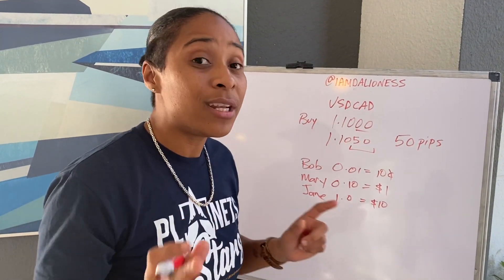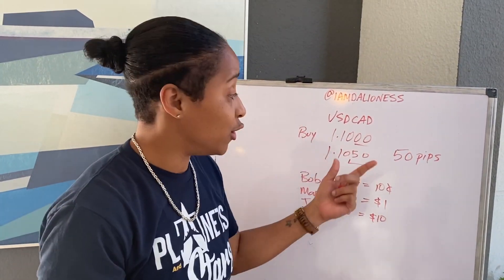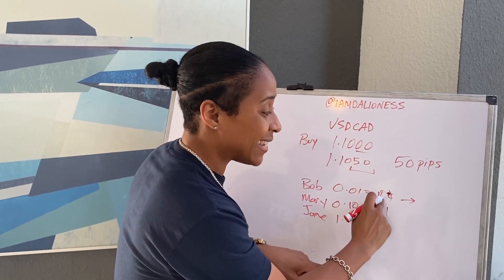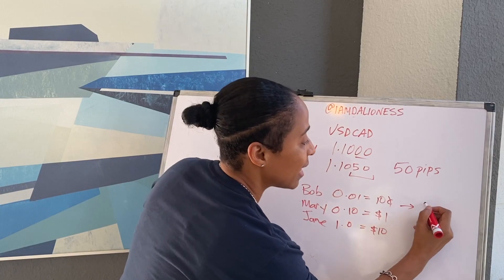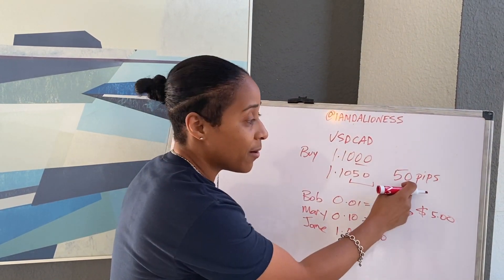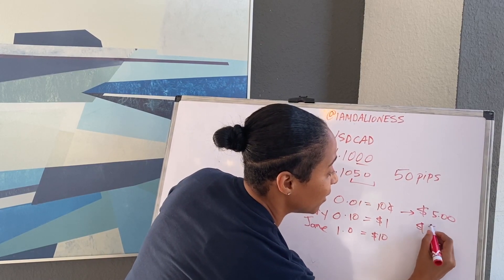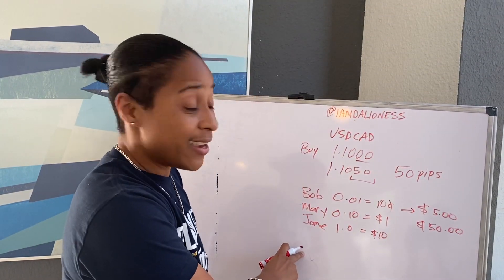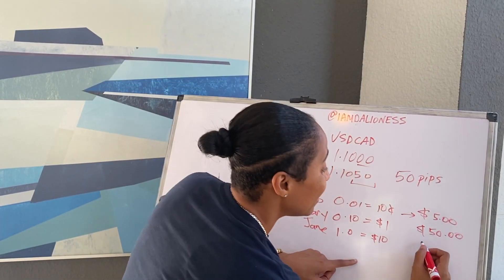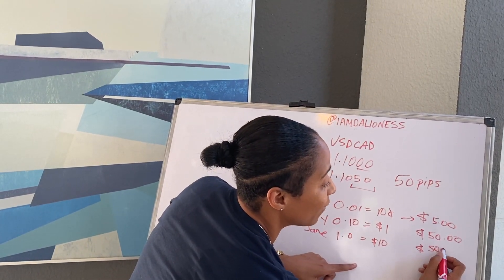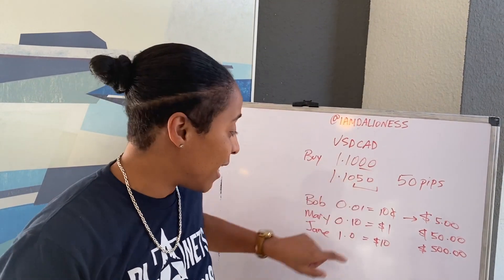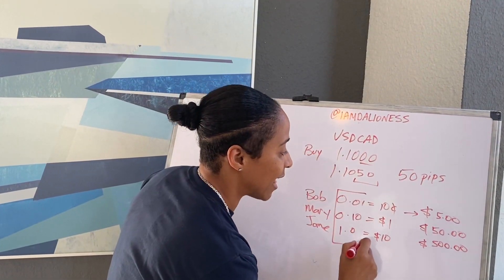Think about this — it's really simple. The price of the US dollar just went up 50 pips. Bob is getting 10 cents a pip, same 50 pips, so he's going to make $5. Mary is getting a dollar per pip — 50 pips, she just made $50. Jane traded a standard lot at $10 per pip, meaning those 50 pips just made her $500. It's the same 50 pips — it just depends on what your lot size was.